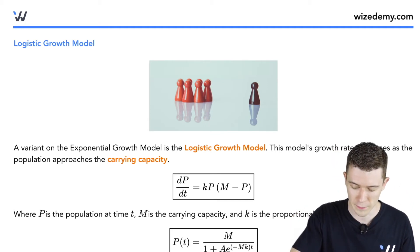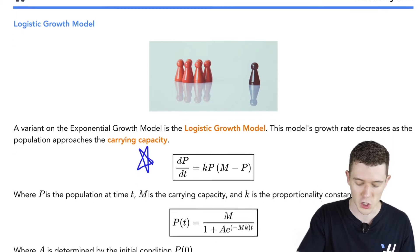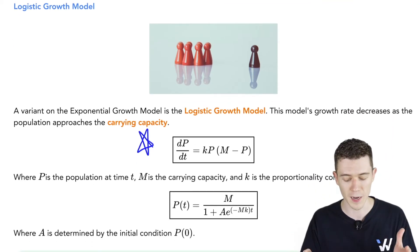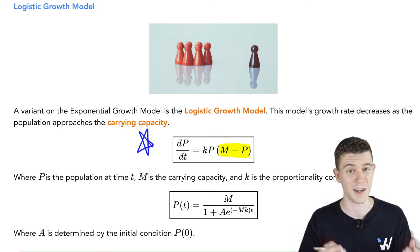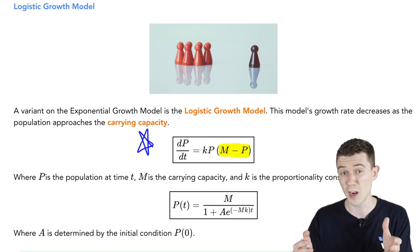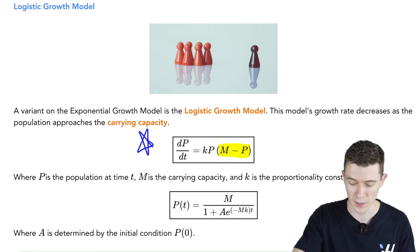We'll use the letter M here for that. You can see the differential equation right here. The change in the population with respect to time equals k, that's that proportionality constant, times the population, times in parentheses, M minus P, the carrying size minus the population.